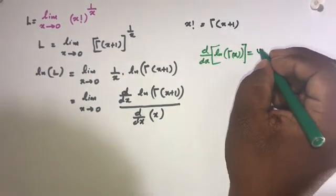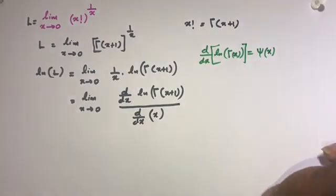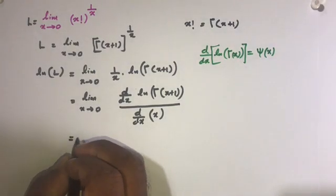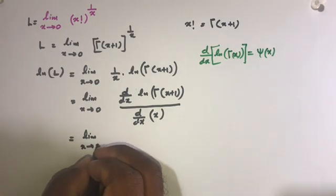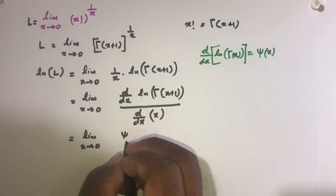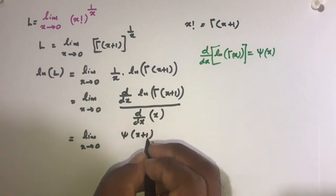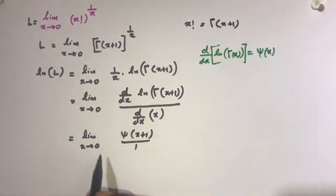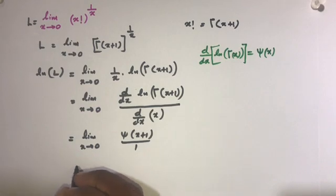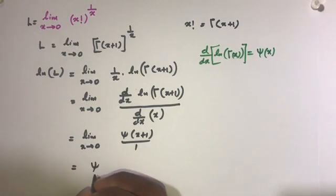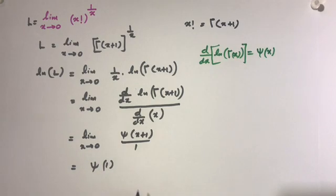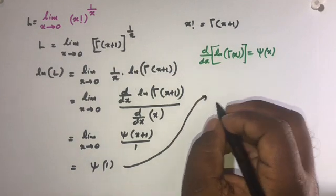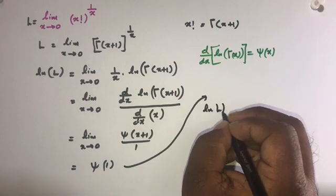So we can write: the limit as x approaches 0 of digamma of x plus 1, over the derivative of x, which is 1. Now as x approaches 0, this is equal to digamma of 1.